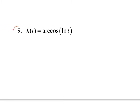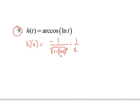Number 9: h of t equals arc cosine of ln t. Arc cosine is just like arc sine but with a negative sign. So h prime of t equals negative 1 over √(1 minus (ln t) squared), times the derivative of ln t, which chains off to 1/t. Note: the exponent 2 on ln t applies to the whole expression, so we leave it as (ln t) squared — you cannot pull that 2 out front.